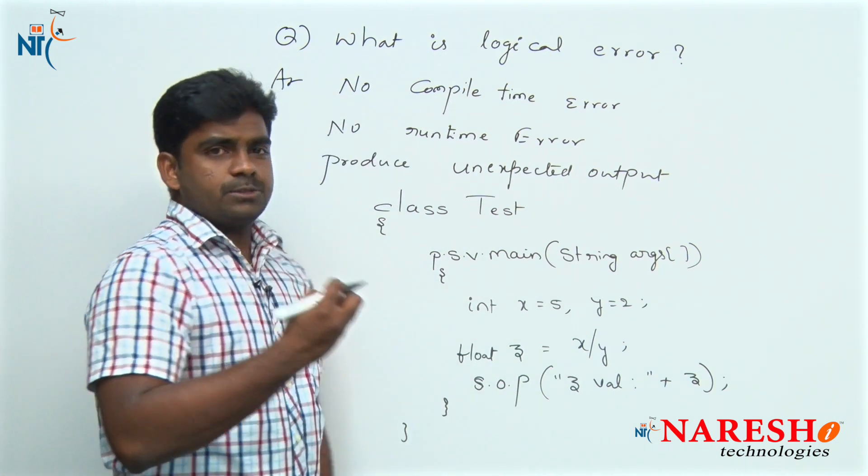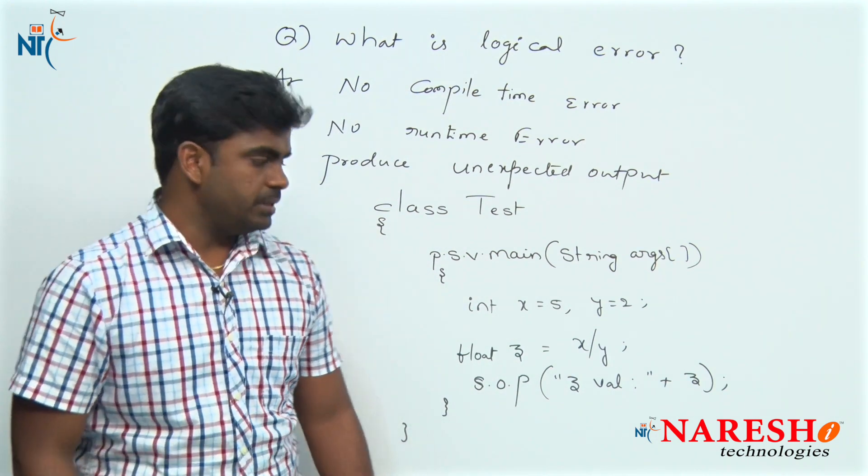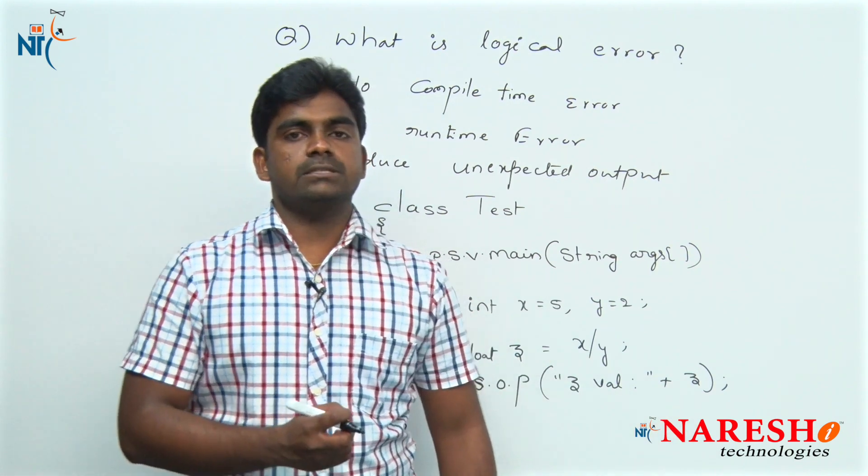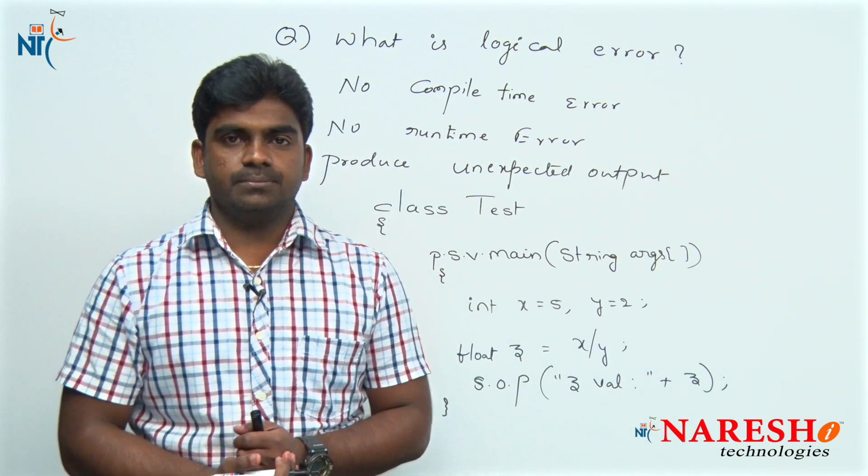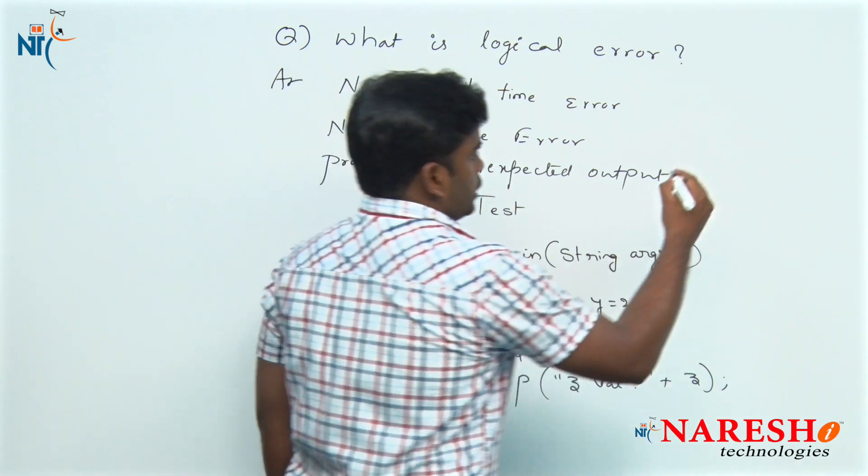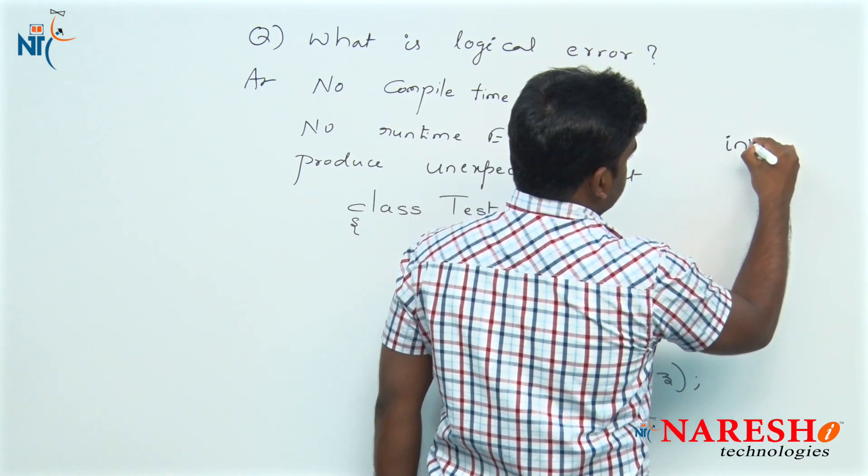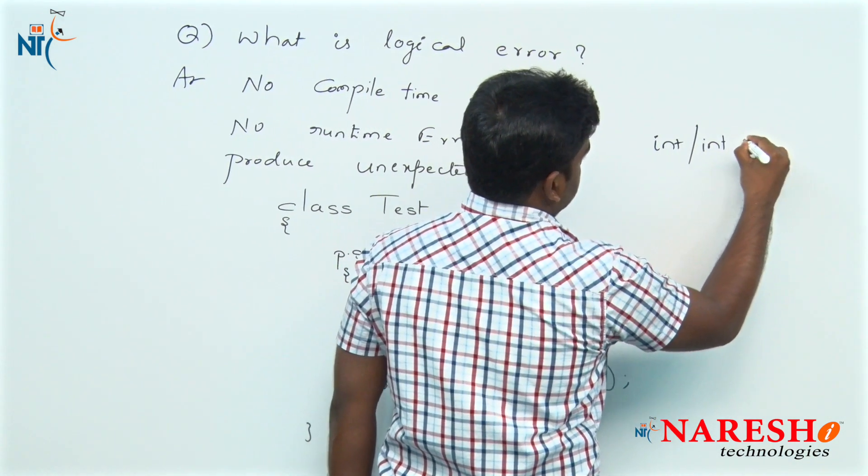Our expectation is 2.5, but z is giving 2.0. Why? What is the reason? See, if you divide integer with integer, the result is an integer only. It will avoid the fractional term.